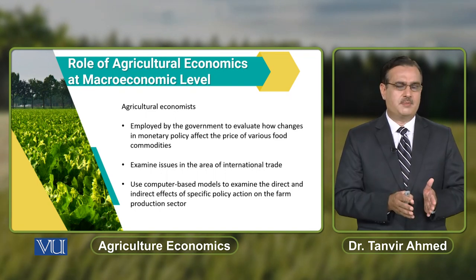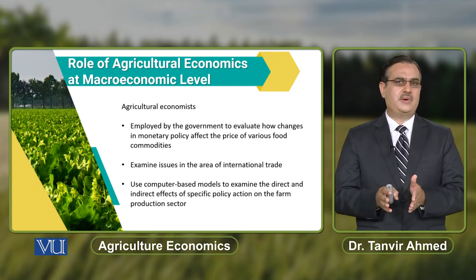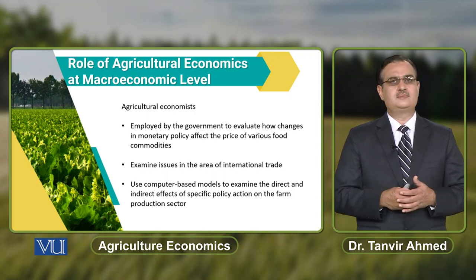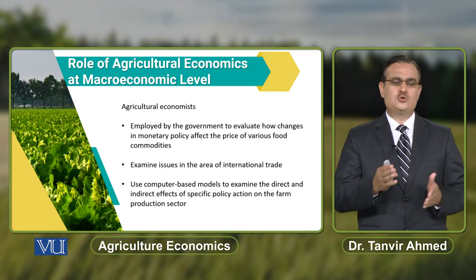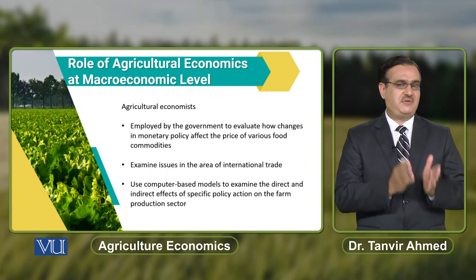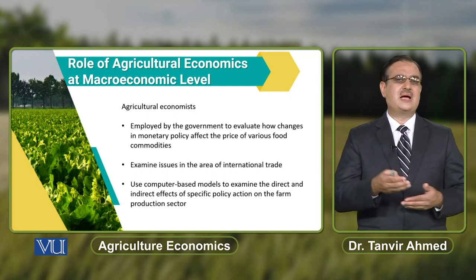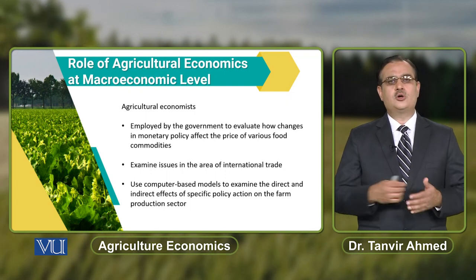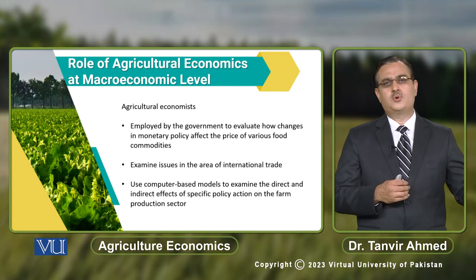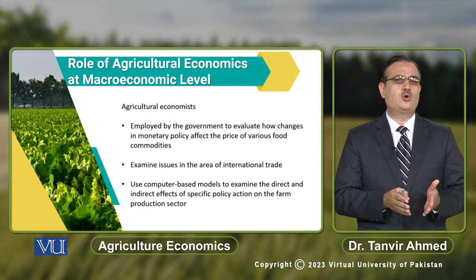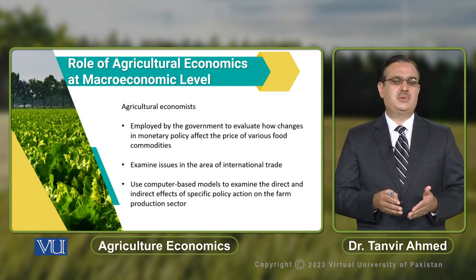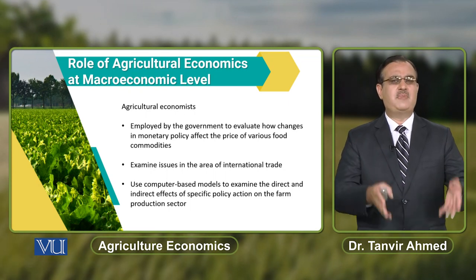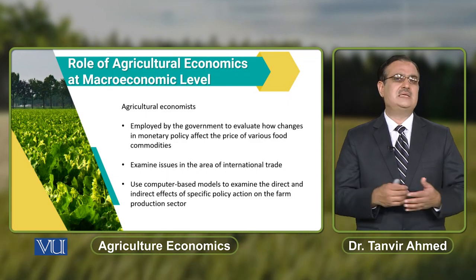Toh hum keh sakta hai ke at macroeconomic level, agricultural economists can study the impact of different macroeconomic variables on agricultural output. In fact, yeh jo bhi aapke paas macroeconomic level pe variables hain aur agriculture output — inke darmiyan ek relationship hai. Kabhi aapka macroeconomic variable aapke agriculture output ko influence karayega, or kabhi aapka agriculture output macroeconomic variables ko influence karayega. Jab hum macroeconomic variables ki baat kertae hain, these are the variables related to GDP, inflation, unemployment, aur wo saare variables jo macroeconomic variables ki category mein list kar sakte ho.